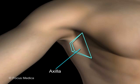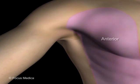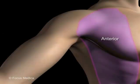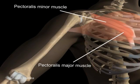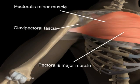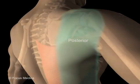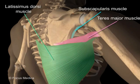The axilla is a pyramidal space between the upper lateral chest wall and the upper arm. It has anterior, medial, posterior, and lateral walls, a floor, and an apex. The anterior wall is formed by the pectoralis major, pectoralis minor, and the clavipectoral fascia. The posterior wall is formed by the subscapularis, teres major, and the latissimus dorsi muscles.